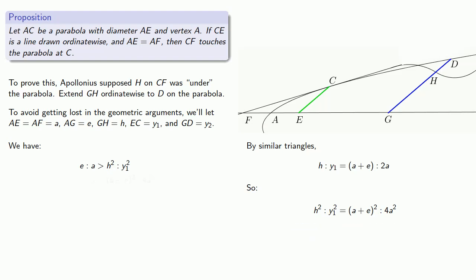And so H squared is to Y1 squared as A plus E squared is to 4A squared. And so that tells us that E is to A is greater than A plus E squared is to 4A squared.